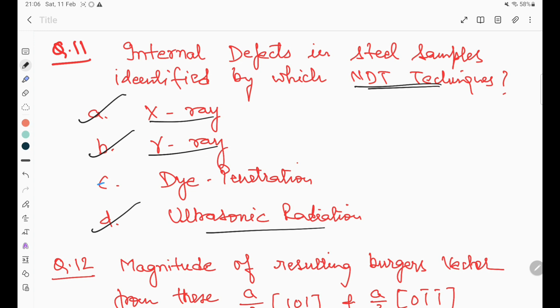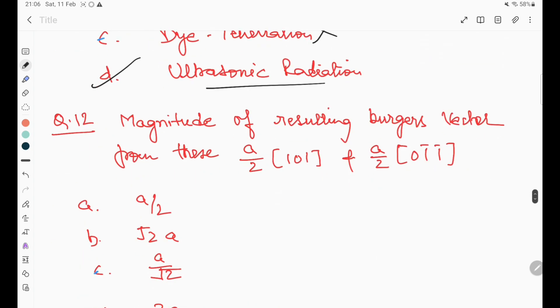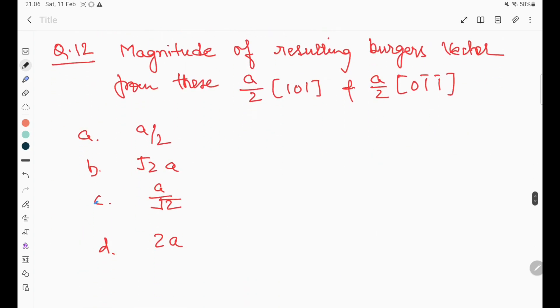In question number twelve, find the magnitude of resulting Burgers vectors from a/2[1 0 1] and a/2[0 -1 -1]. By solving these, we can see that the resultant will be a[1 -1 0], so the magnitude will be a upon root 2. Option C is the right answer.